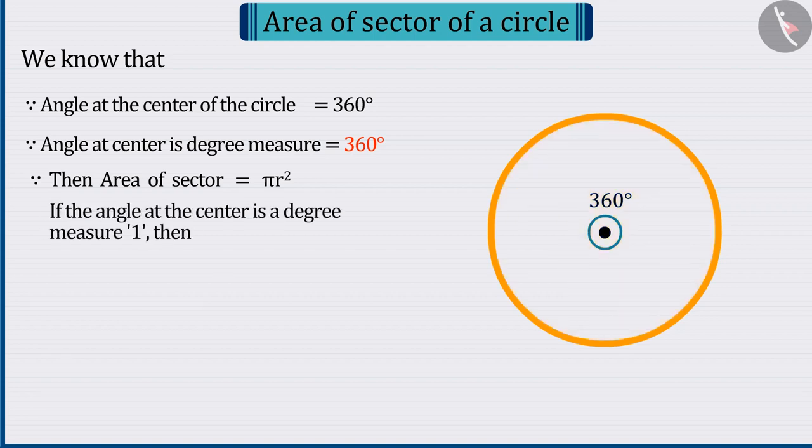Similarly, when the degree measure of the angle at the centre is 1, the area of the sector is determined to be Pi R square upon 360.